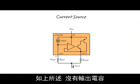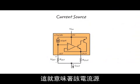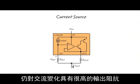As I mentioned, we can make a current source, and not having an output capacitor means that the output impedance of the current source to AC changes is still very high.